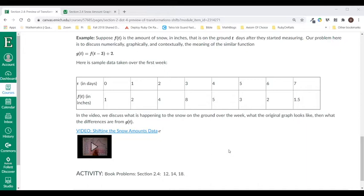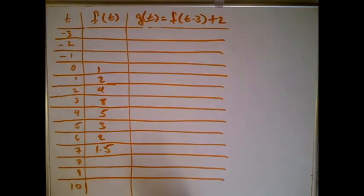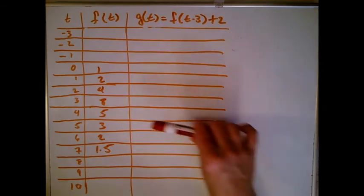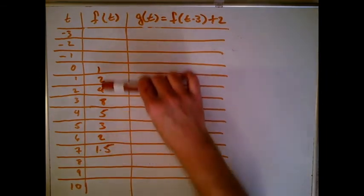We're being asked to find data and graph the function g(t) = f(t - 3) + 2. To do this I'm going to go to the whiteboard and start calculating things nice and slow. After this we'll try to do it faster, but at this moment, nice and slow.